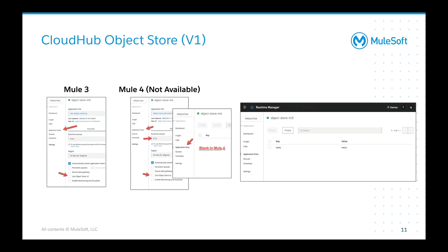For the UI differences in Runtime Manager: if you uncheck 'use object store V2', it will default to object store V1 for a Mule 3 application, and any data you store into object store V1 — you can see that key-value pair. For Mule 4, this isn't available. If you uncheck 'use object store V2', it will default to the worker runtime and leverage either in-memory or the file store available on that runtime.